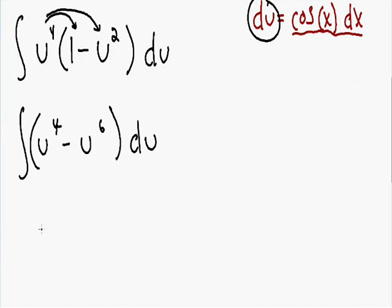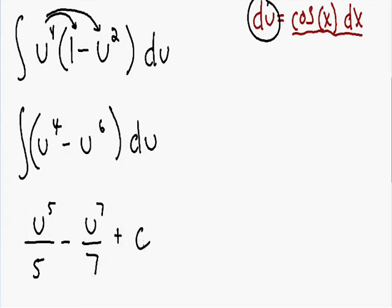If we integrate, we just add 1 to the exponent. So u to the 4th becomes u to the 5th divided by 5. And subtracting the integral of u to the 6th, we add 1 to the exponent to get u to the 7th over 7. We can't forget to add our constant plus c, so now we have completely integrated.